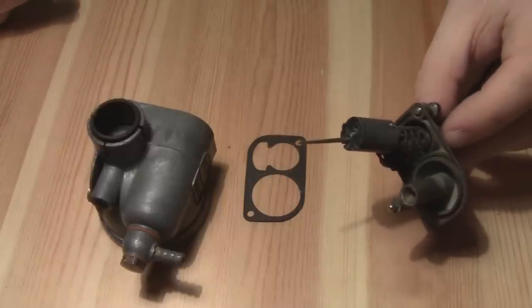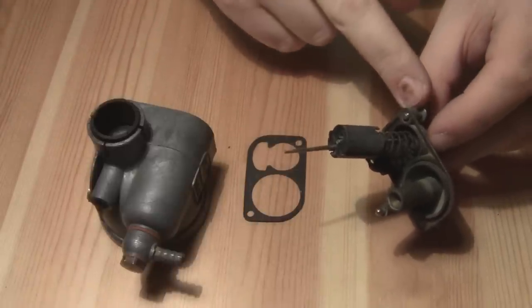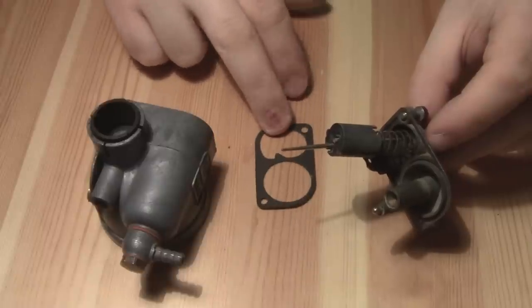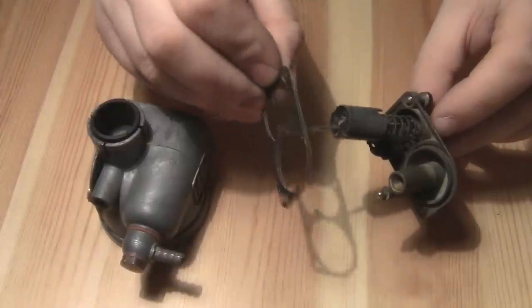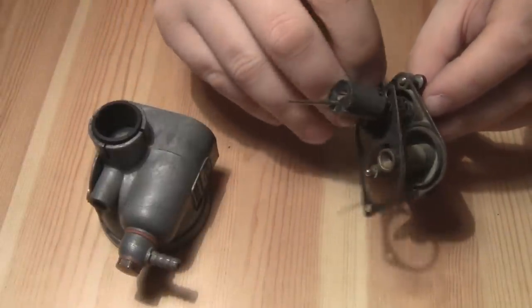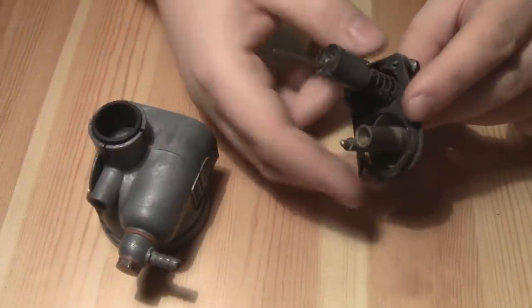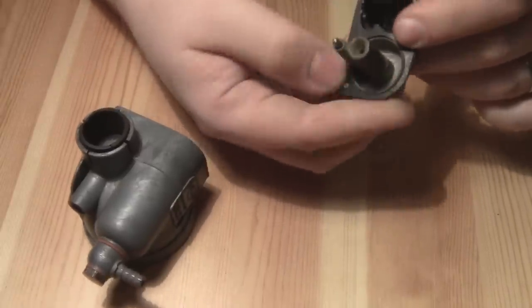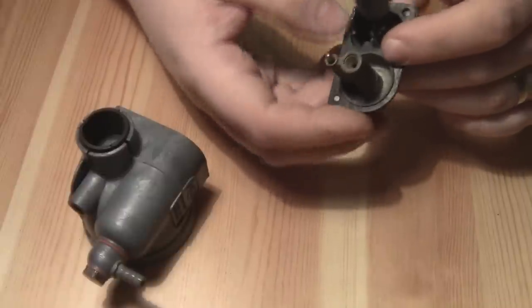The next thing to do is to put the top assembly into the main carb body. You've got this gasket here, so I'm just going to slot that over here into place.